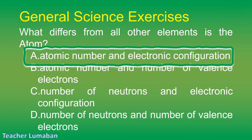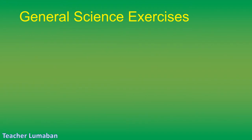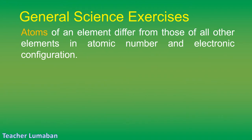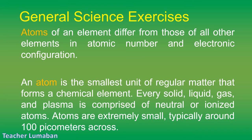The correct answer is Letter A: atomic number and electronic configuration. Atoms of an element differ from those of all other elements in atomic number and electronic configuration. An atom is the smallest unit of regular matter that forms a chemical element. Every solid, liquid, gas, and plasma is comprised of neutral or ionized atoms. Atoms are extremely small, typically around 100 picometers across.